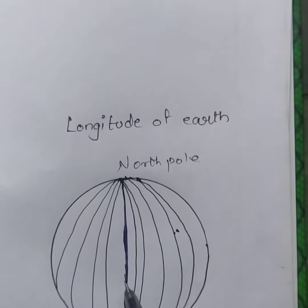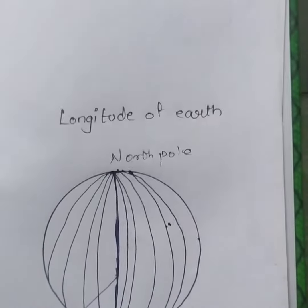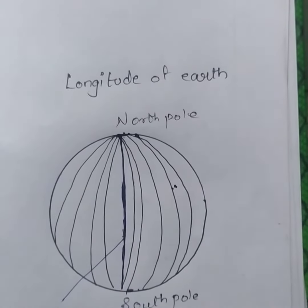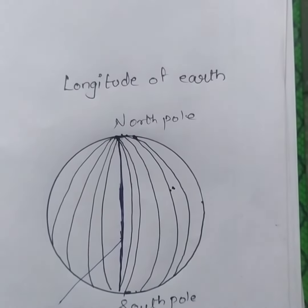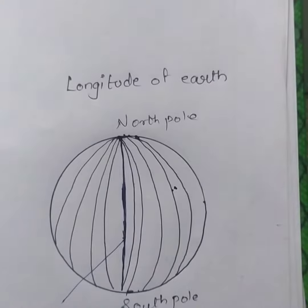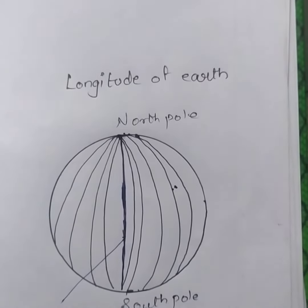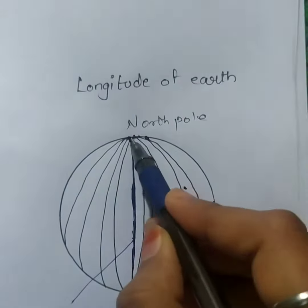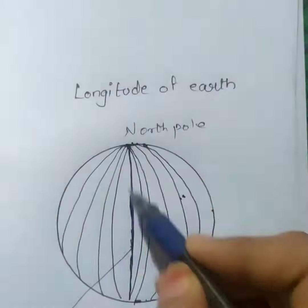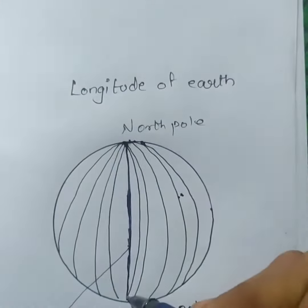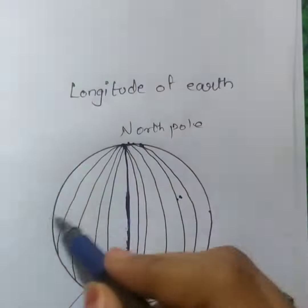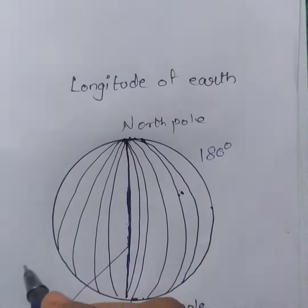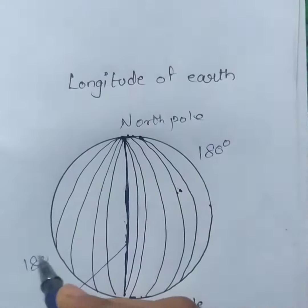This line is known as the prime meridian. Prime meridian is the line which passes from the middle of the earth's surface and it divides it into two halves. This half is known as 180 degrees and the other is 180 degrees.